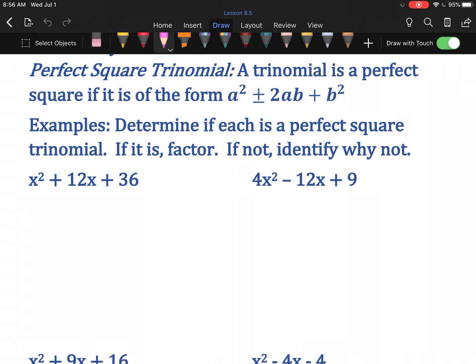The examples say determine if it's a perfect square trinomial, and if it is, we'll factor. If not, we're going to tell why it isn't. x² + 12x + 36. x², the first term, is a perfect square. It is just x², which means its square root is x. The third term is 36. 36 is a perfect square. Its square root is 6.